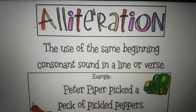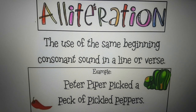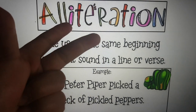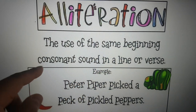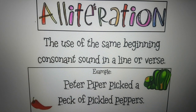Now we move on to alliteration — the use of the same beginning consonant sound in a line or verse. If you're not sure what a consonant means: in the alphabet there are 26 letters, but there are 21 consonants because the vowels A, E, I, O, U are not consonants. Consonants are the letters that are not vowels, for example B, C, D, etc. An example: Peter Piper picked a peck of pickled pepper — that is a tongue twister and it's alliteration.